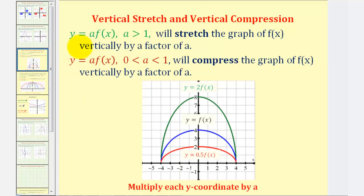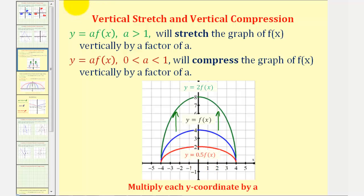Looking at the value of a: if a is greater than one, then we have a vertical stretch by a factor of a. Notice if we look at y equals f of x here in blue, y equals two times f of x is a vertical stretch. And if we graph y equals zero point five times f of x, we have a vertical compression.